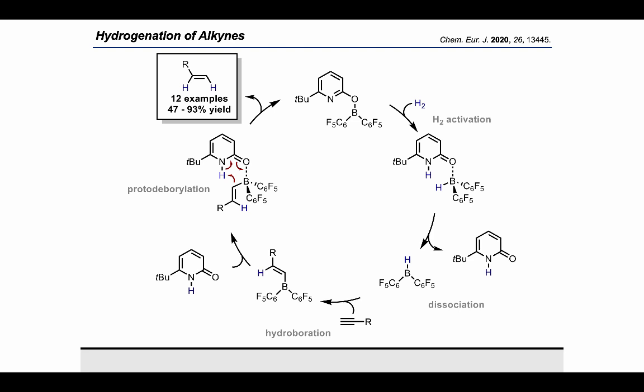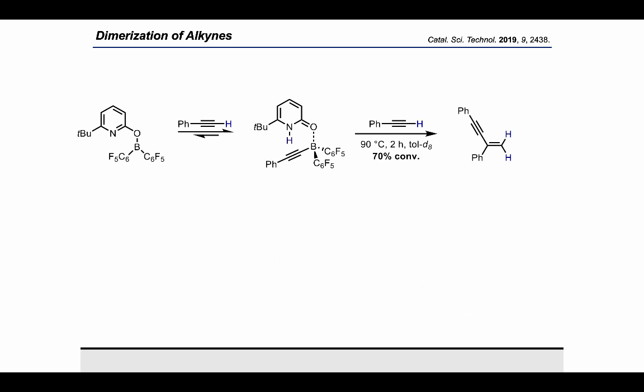The hydrogenation of terminal alkynes is challenging because the pyridonate borane does not only activate the hydrogen, it also cleaves the CH bond of terminal alkynes. Exchange experiments with different terminal alkynes showed that this CH cleavage is reversible, which renders the hydrogenation pathway accessible under hydrogen pressure.